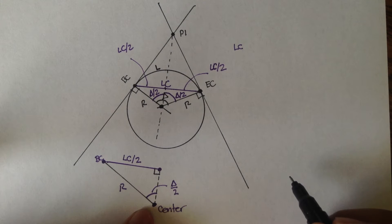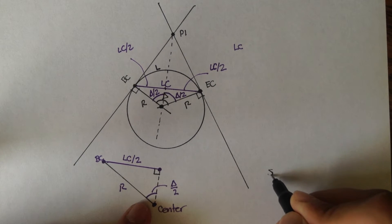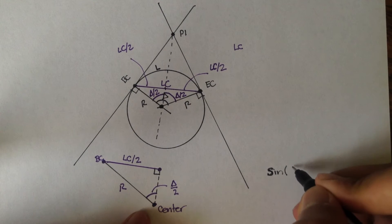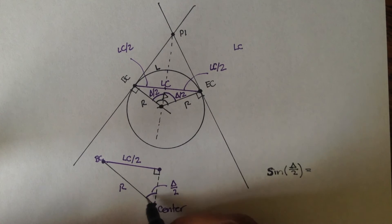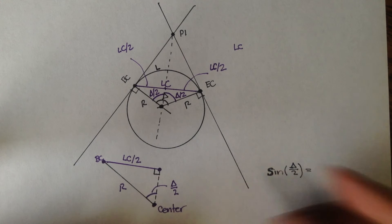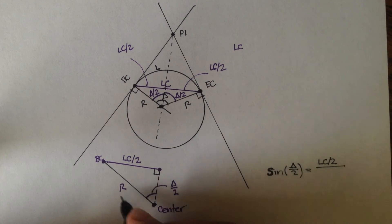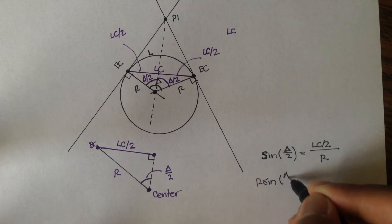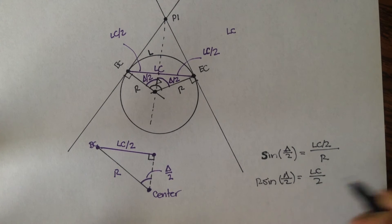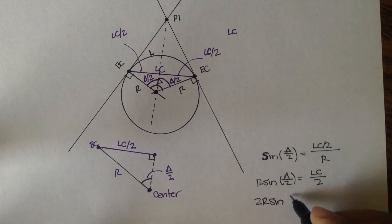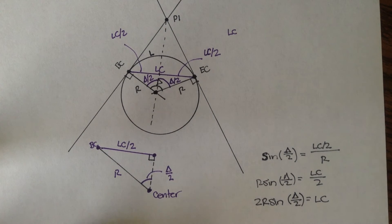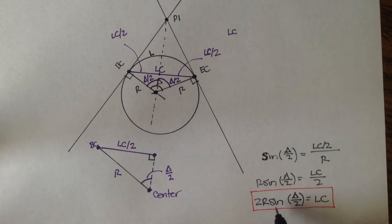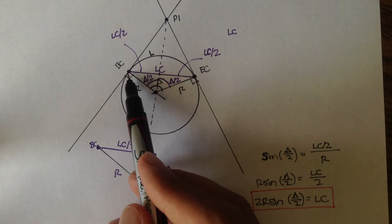Using basic trig: sine of delta over 2 equals the opposite over the hypotenuse, which is LC over 2, divided by R. Solving for LC: we bring R to the other side to get R·sin(δ/2) = LC/2, then multiply both sides by 2 to get 2R·sin(δ/2) = LC. So the long chord equals 2R·sin(δ/2). If we know the radius and the interior angle, we can find the long chord — the straight distance from BC to EC.